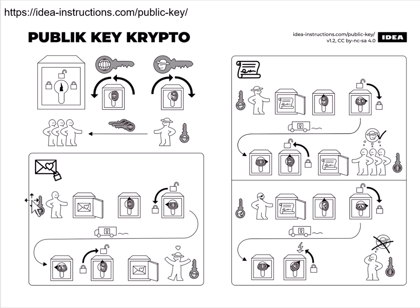We can also do the reverse: lock a safe with my private key, and then it can be unlocked with the public key. The public key is public — everyone knows it. The advantage is to say that I want to make sure you know a message is from me. In other words, it's a digital signature. I tell everyone here's the public key you're going to use; anything I send, you should be able to unlock with this public key. If anyone else tries to send a message as me, it won't be unlockable — you'll just get gibberish out.